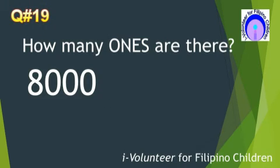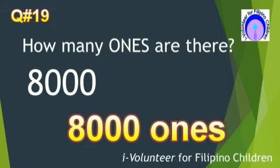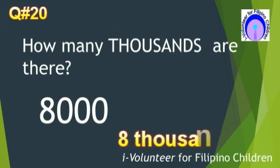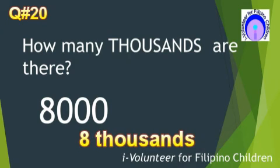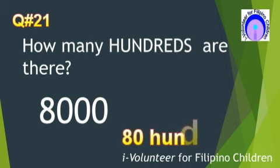Number 19. How many ones are there? There are 8,000 ones. Number 20. There are 8,000s. Number 21. How many hundreds are there? There are 80 hundreds.